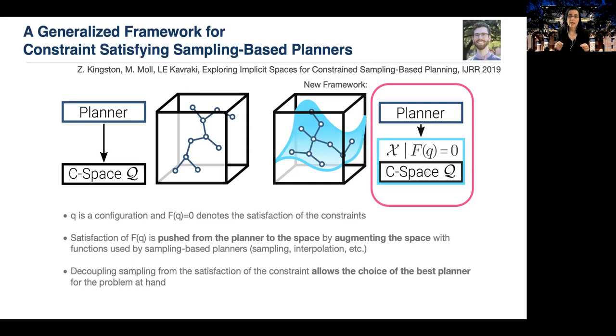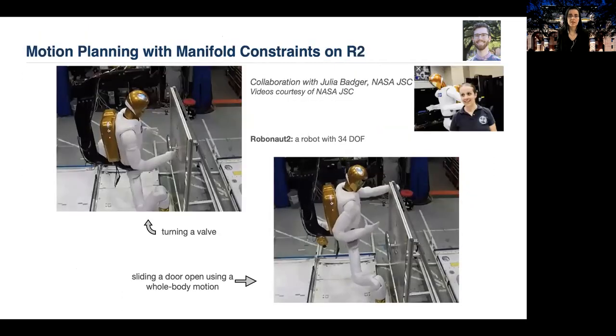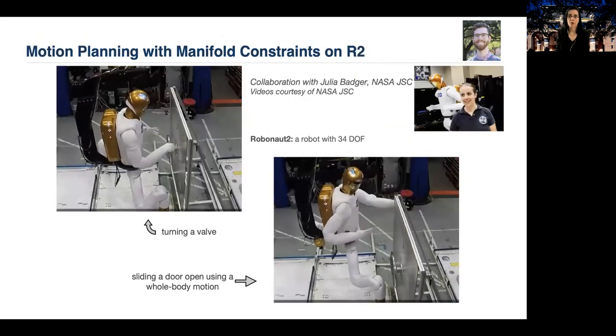Decoupling sampling from the satisfaction of the constraint allows the choice of the best planner for the problem at hand. So in this case, one is free to choose the sampling strategy that is most appropriate for a problem, and Zach's planner will take care of the constraint satisfaction. We show in our 2019 IJRR paper that this can make a huge difference, even determine if you can solve the problem or not. Theoretical results show that the framework preserves the probabilistic completeness and asymptotic optimality of the underlying sampling-based planner.